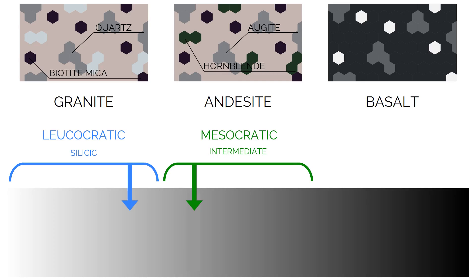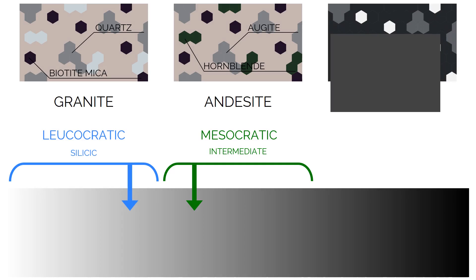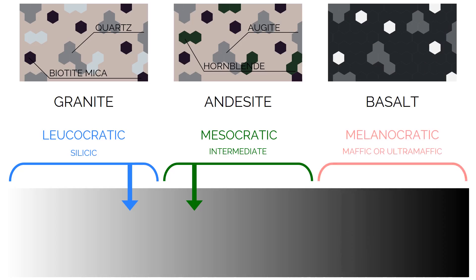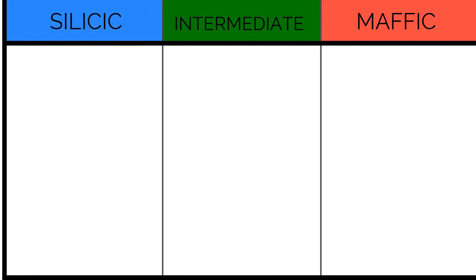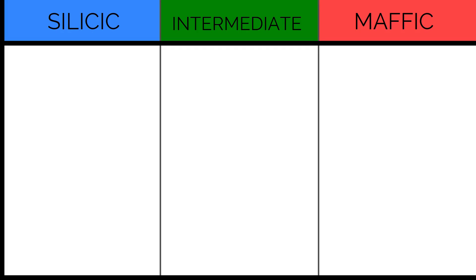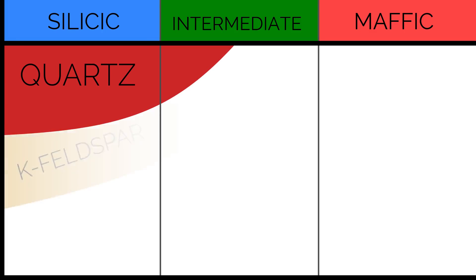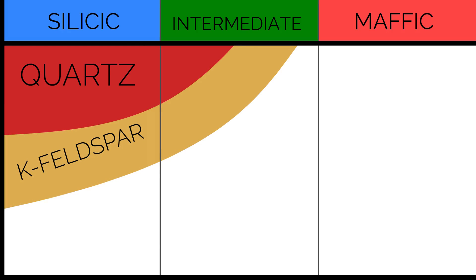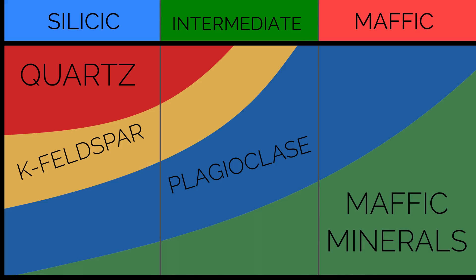Mafic rocks are immediately identifiable by their colour. Lots of magnesium oxide and iron oxide is present, giving a melanocratic aspect. They do not contain quartz due to the lack of silica — just 45 to 52%. However, they do contain augite, and sometimes olivine. Basalt is a common mafic rock. This graph helps visualise the relative amounts of each mineral in the rock types. Note how there is no quartz or potassium feldspar in the mafic rocks, and very few mafic minerals in the silicic rocks.